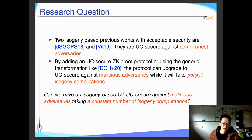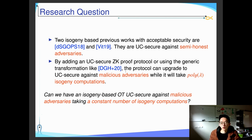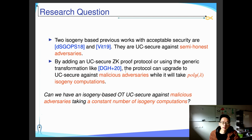Malicious adversaries are not required to follow the protocol specification. However, upgrading to malicious security will take a polynomial number of isogeny computations, because some CSIDH-relevant zero-knowledge proofs or sigma protocols take a polynomial number of isogeny computations. So our research question is: can we have an isogeny-based OT that is UC secure against malicious adversaries and takes only a constant number of isogeny computations?